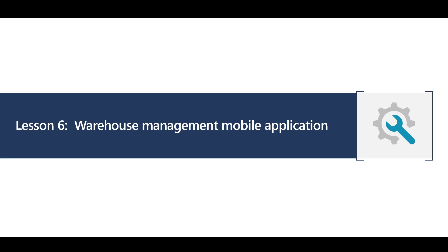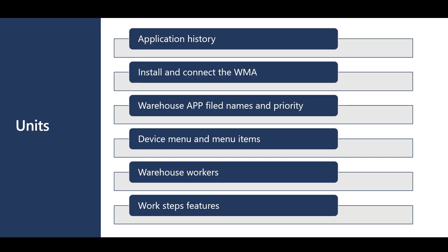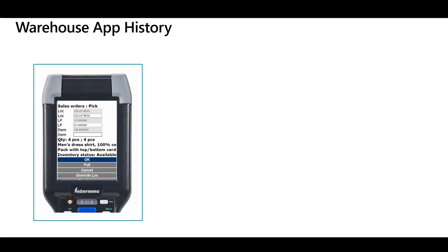Hello and welcome to lesson 6. This session is about the Warehouse Management Mobile Application. In this session we're going to review the Warehouse Management Mobile Application history, how to install and connect to the app, then we'll move to the configuration part and review how to manage the field names and the priority groups, how to build the mobile application structure using the mobile device menu and menu items, how to manage and define the warehouse workers, and lastly we'll review the work step features like step instructions, promoted fields and editors. Let's get started with an overview about the Warehouse Management Application history — how we started and where we ended up today.